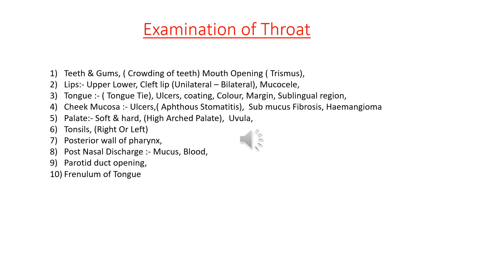Stomatitis, glossitis, and aphthous ulcers are also seen. Aphthous ulcers are small, very painful ulcers that change their position daily — they heal and crop up in some other place. They are usually multiple, small, and only mucosal in depth — not very deep. By looking at the ulcers alone, one can make out that they are aphthous ulcers.